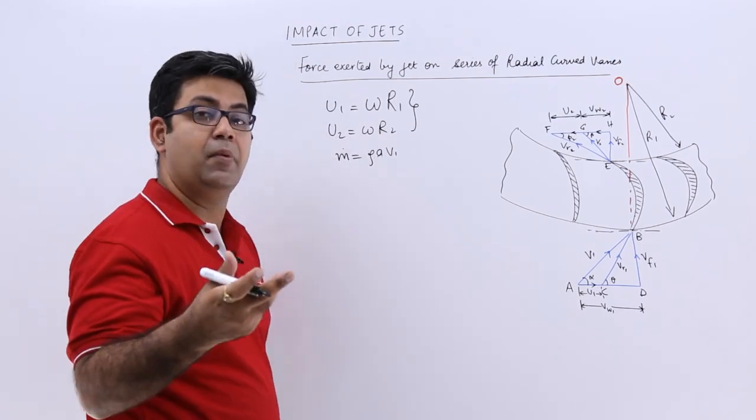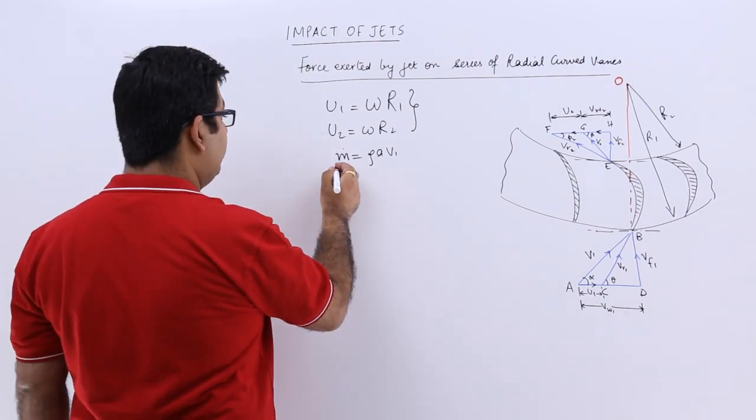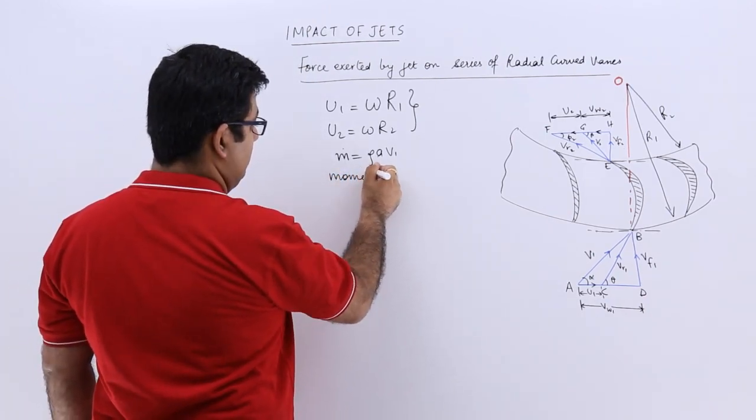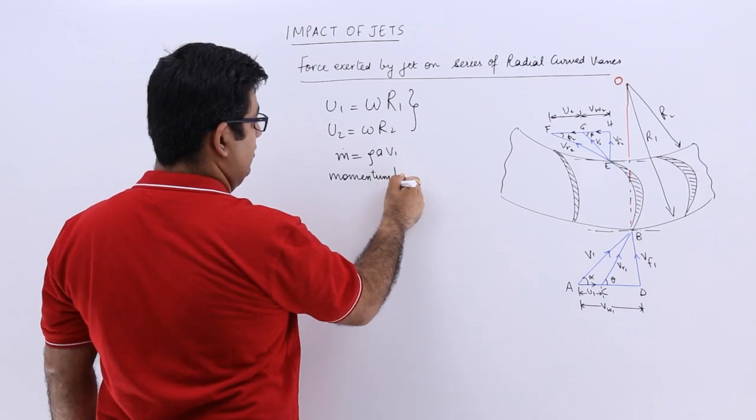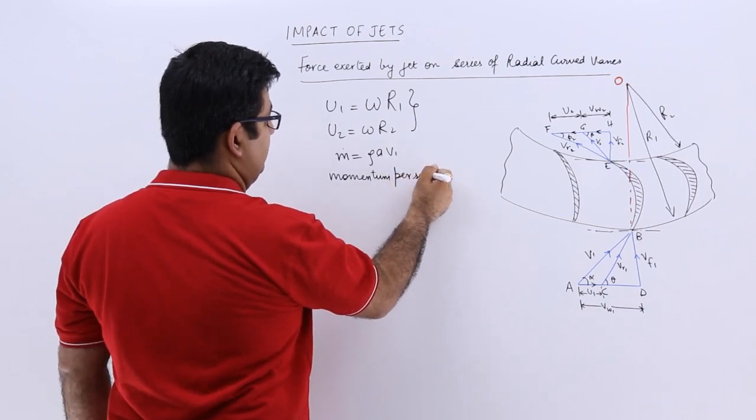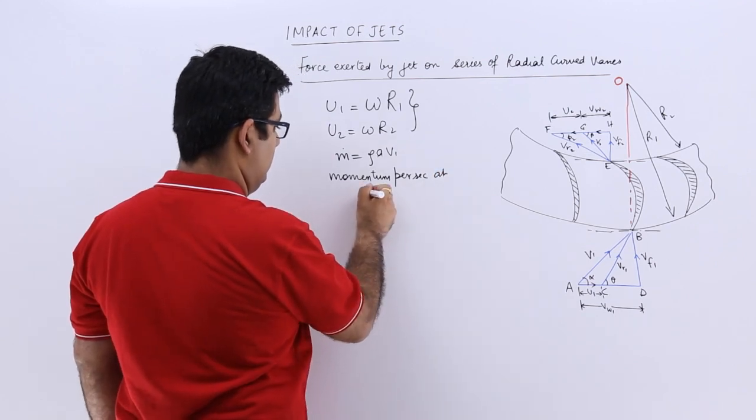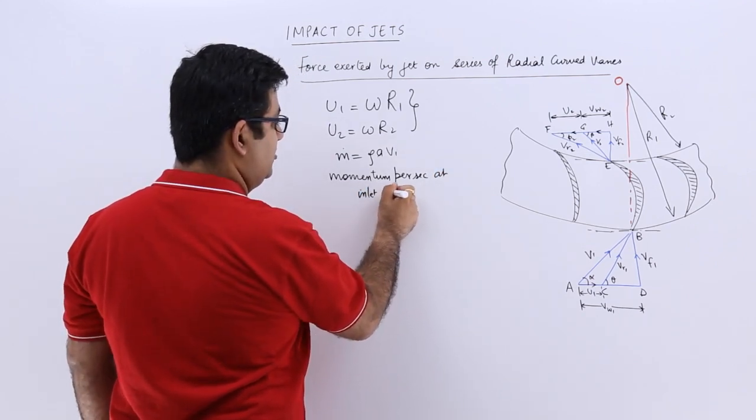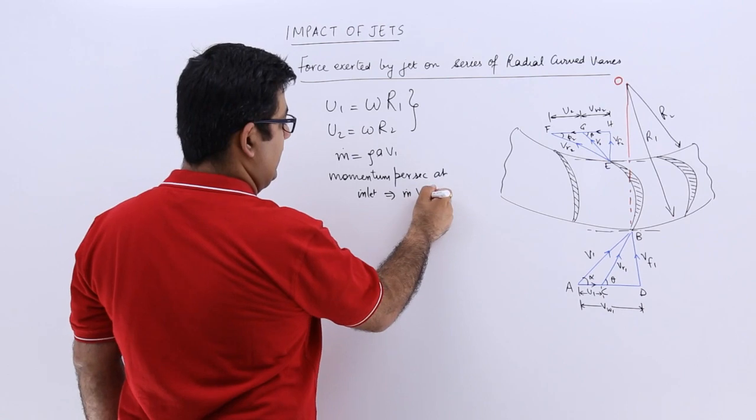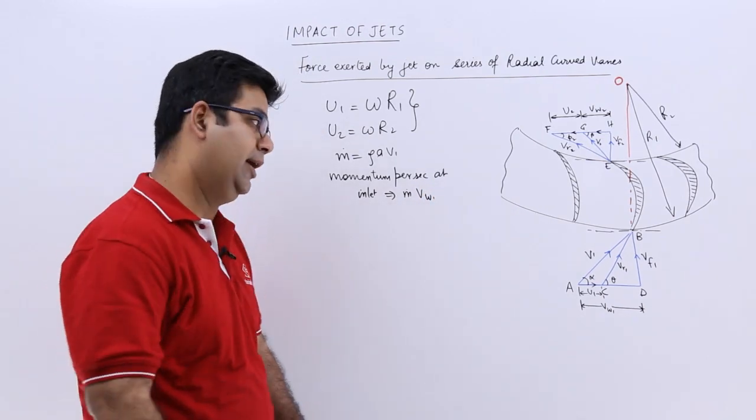With mass I can find out the momentum. The momentum per second striking the plate at inlet would be mass into the flow velocity at inlet.